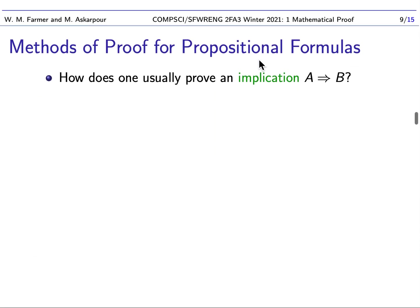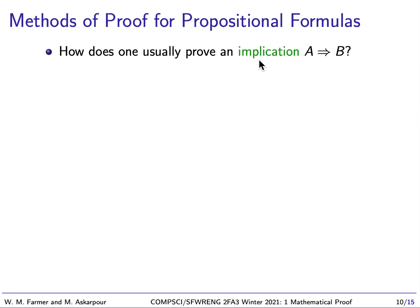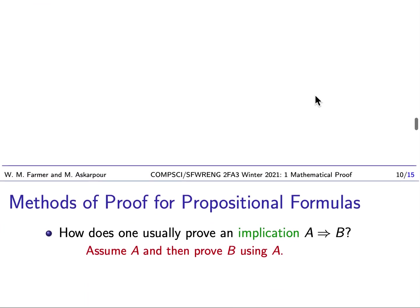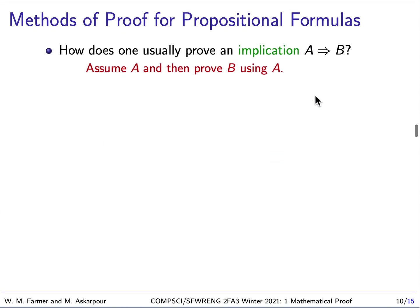Okay, so we're going to look at methods of proof for propositional formulas. The first one we're going to look at is an implication, A implies B. How do we normally prove this? The way we normally prove this is we assume A, and then we prove B using A. In a sense, that's what an implication says. It basically says if we assume A is true, is B true. So that's how we deal with the implication. So if you're asked to prove something in the form, if A is true, then B follows, you're going to assume A, and assuming A, you're going to try to prove B.